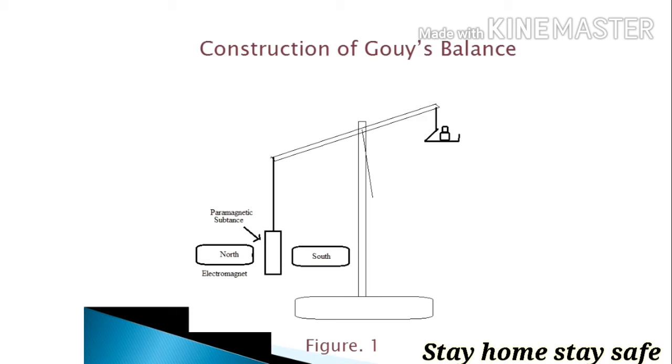There is an electromagnet with two different poles, north and south pole, and the substance is filled into the capillary tube.